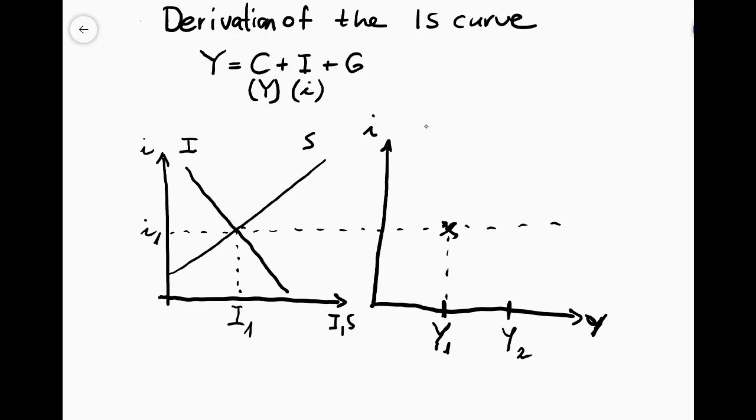So what happens then in the loanable funds market? Now because we chose Y it is going to appear in the market for loanable funds as an exogenous change. And we know that the savings in the economy are Y minus C minus G. And that means that a higher level of real GDP should shift the savings curve to the right. And then in the new equilibrium, we should get a lower equilibrium interest rate and higher level of investments.